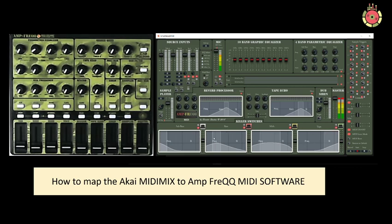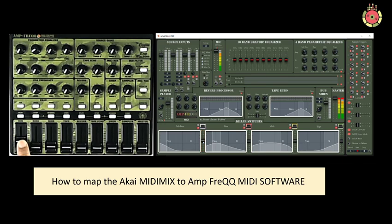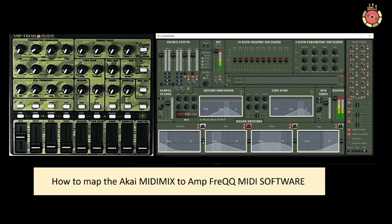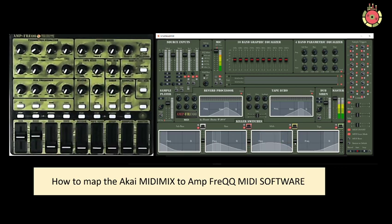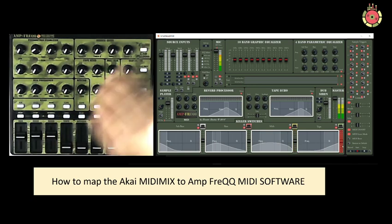I'm going to go ahead and start assigning the controls. It's as simple as clicking on your screen as you see something highlight. This is the fader for the sub bass, which is over here on the controller. As I move this fader you will see that the highlight has gone, and I'm putting the fader in the correct position which is at 0, about in the middle. Second one is the bass. Third one is mids.